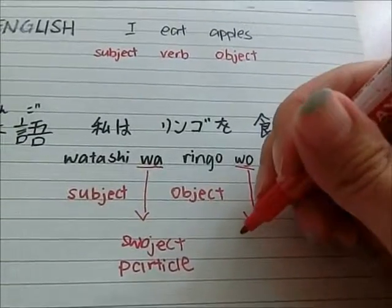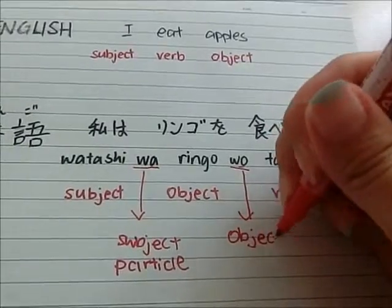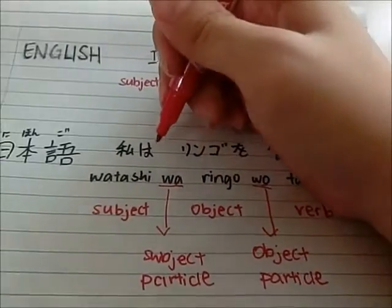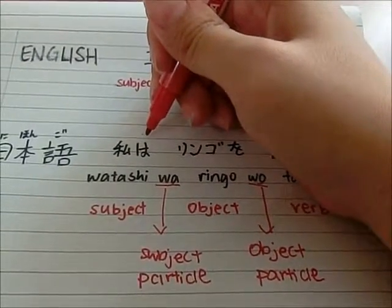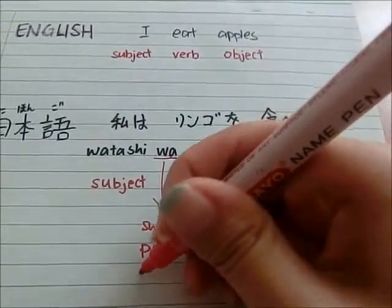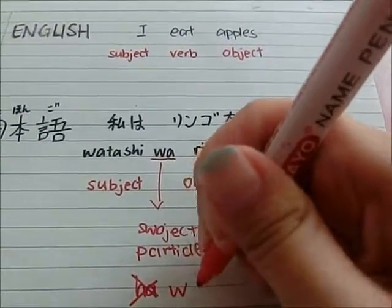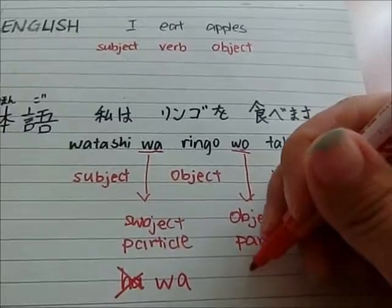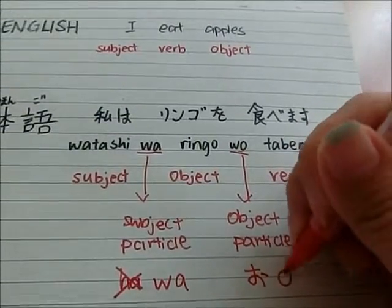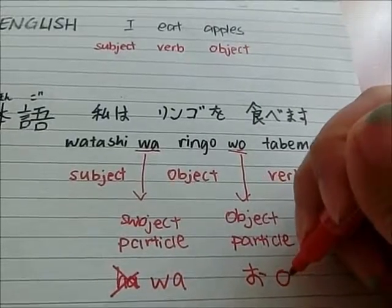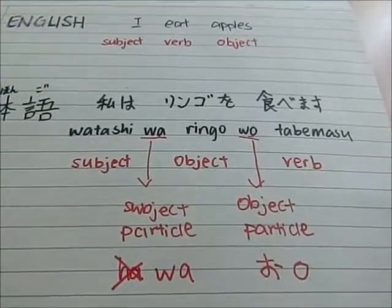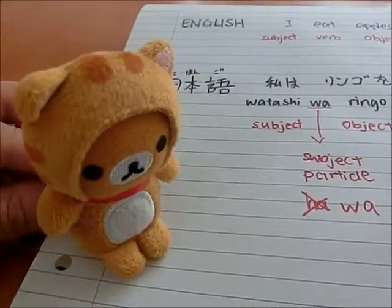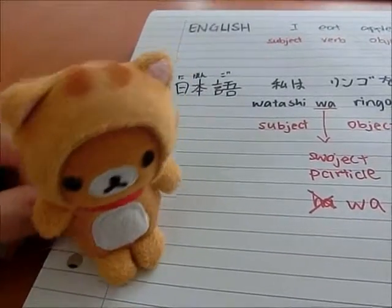If you don't get the particles right, the apples will eat you — so you better get it right! Now, the object particle is 'wo.' If you have already learned your hiragana, you will know that は is pronounced 'ha,' but as a subject particle it is pronounced 'wa.' And を is also pronounced 'wo' — or it sounds like 'o.'